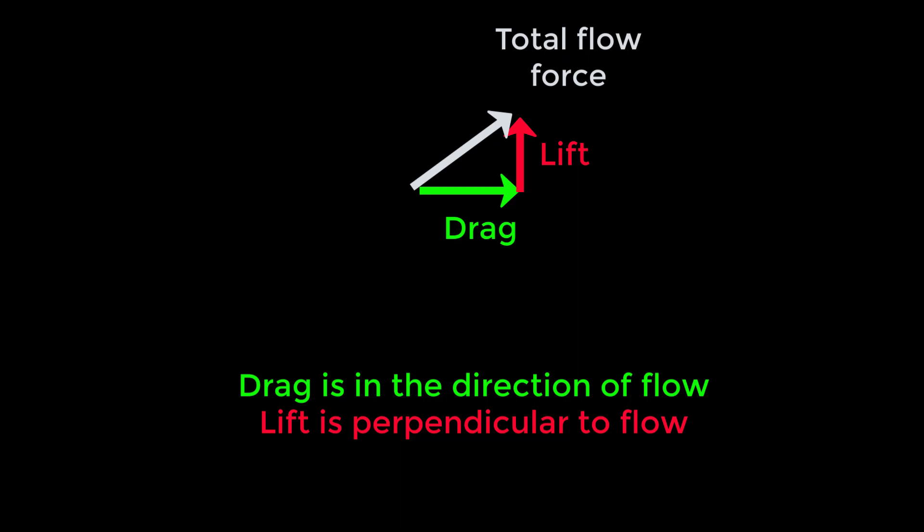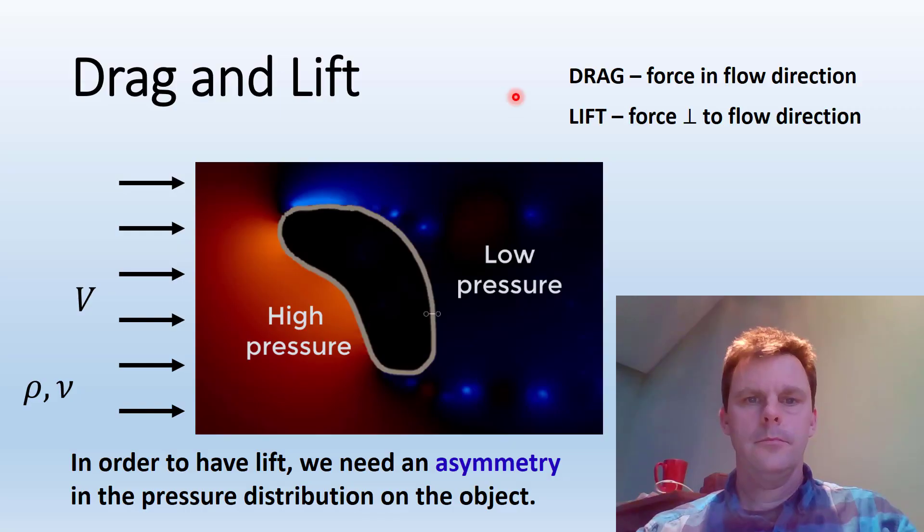So that's really the distinguishing feature between drag and lift. Drag is always going to be in the direction of flow and lift by definition is perpendicular to the flow. Lift is not always in the upwards direction vertically. So it can be down or up, it can be left or right, but the key is that it's perpendicular to the flow direction. So when do you get the lift force? Well you get the lift force when you have an asymmetry in the pressure distribution. So in this case we need to have somehow a higher pressure on the bottom side of the object than on the top side of the object in order to have a force that will be perpendicular to the flow direction.